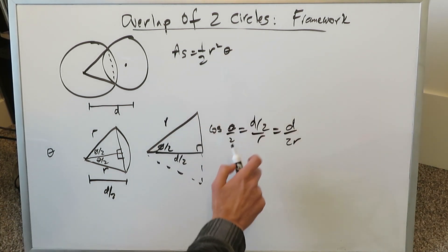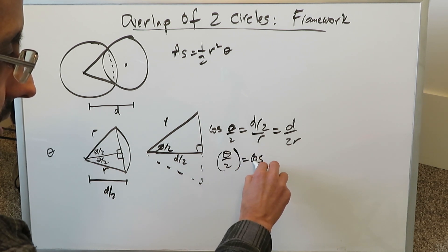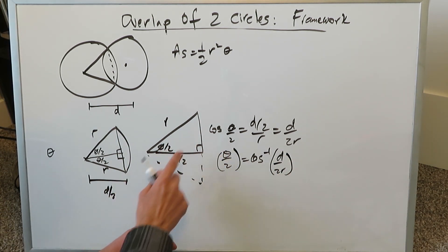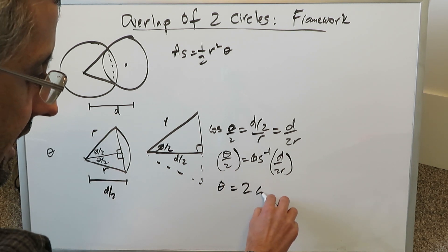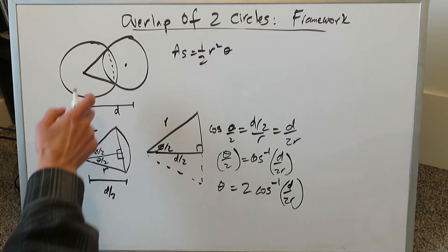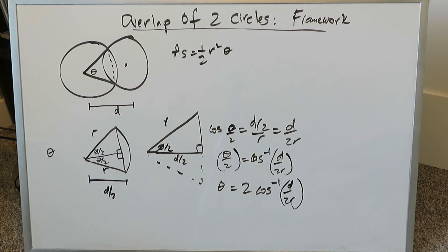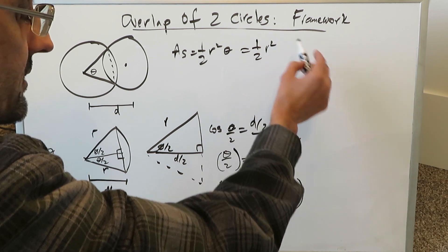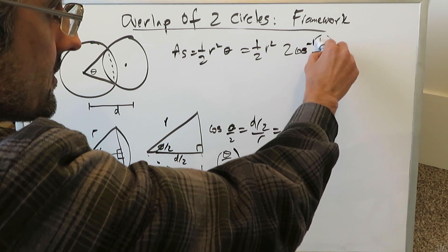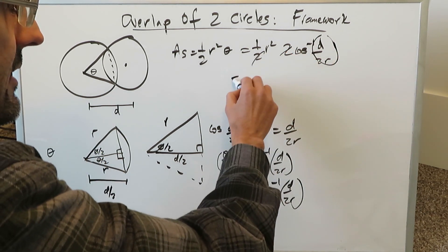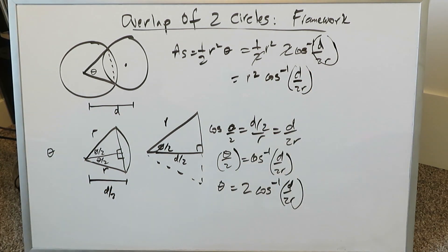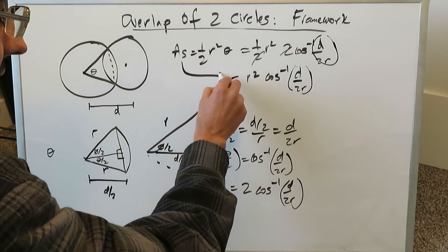Solving for theta: theta over two equals arc cosine of d over 2r, therefore theta equals two times arc cosine of d over 2r. That is the value of the angle theta affecting that sector. The area of a sector equals one-half r squared times theta, which is two times arc cosine of d over 2r. The twos cancel, giving: area of the sector equals r squared times inverse cosine of d over 2r. That is our area of sector.